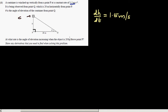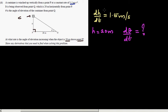This is the right angle and theta is the angle of elevation. The question is: at what rate is the angle of elevation increasing when the object is 20 meters above point P? So when h is 20 meters, what is dθ/dt? We know dh/dt and we want to find dθ/dt when the height is 20 meters above the ground.